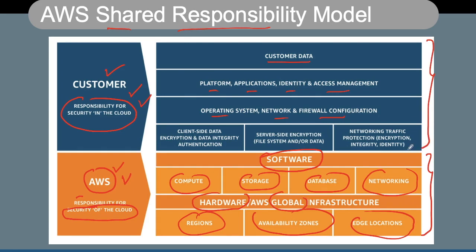These responsibilities will also vary depending on what services are being used and what kind of service model you are in — IaaS, PaaS, or SaaS — so some of these responsibility metrics will change accordingly. This is typically called the AWS shared responsibility model.